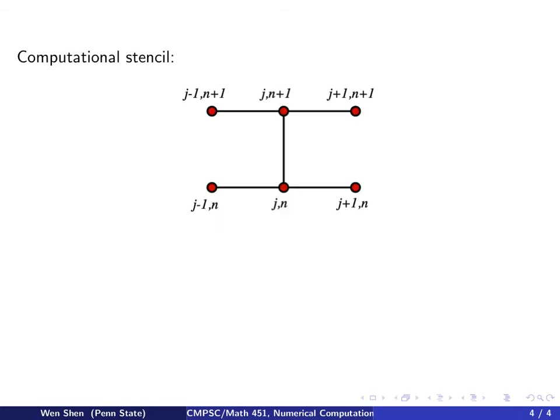So here's the computational stencil. It just shows you how many points are involved in one equation. At time step N, I need three points information there, and I use this to determine three points at time step N plus 1. So these three at an unknown level neighboring three, like in the implicit method, this is what gives us in the end a tri-diagonal structure.